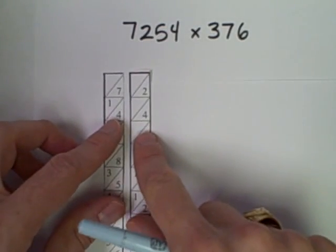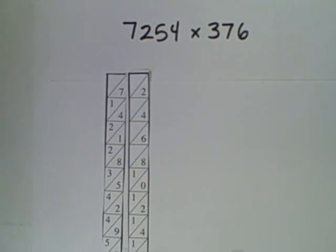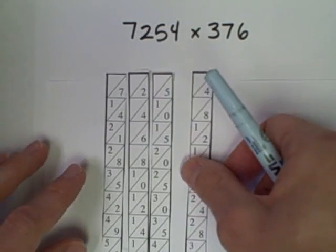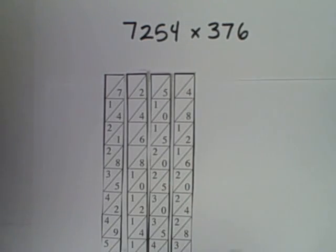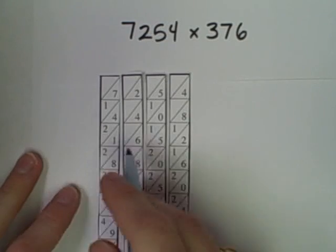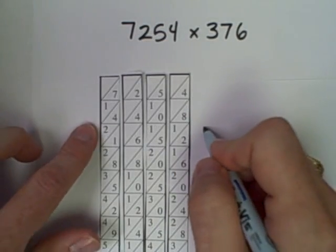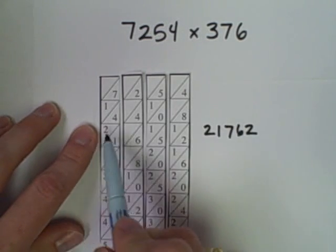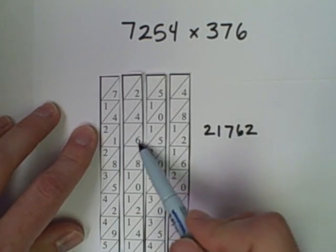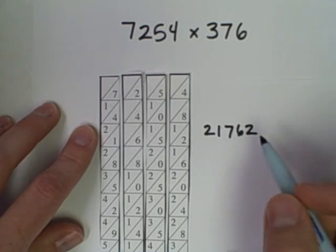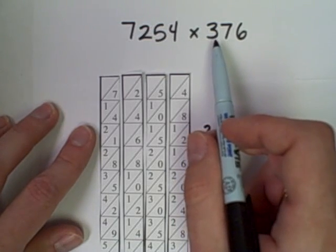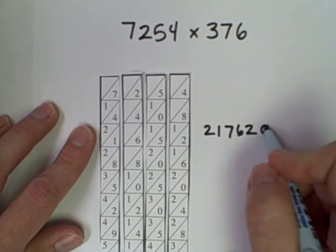7,254 times 3 is on this third row, which would be 2, 1, 7, 6, 2, 2, 1, 7, the 6 and the 1, 6, the 5 and the 1, 2. Now that's just times 3, but I want to multiply it by 300, so I'll put a couple of zeros on there.